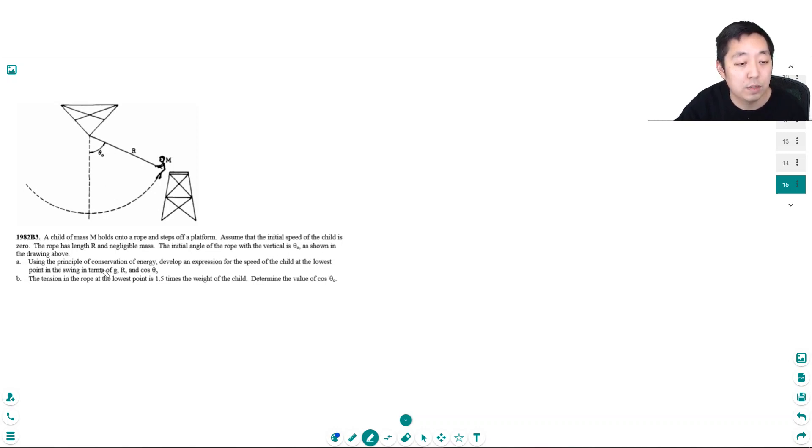Using the principle of conservation of energy, develop an expression for the speed of the child at the lowest point in the swing in terms of g, r, and cosine theta.